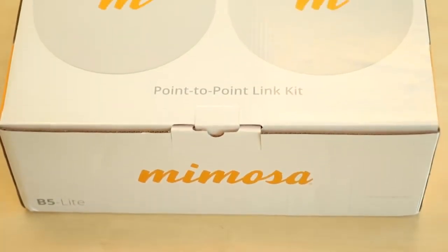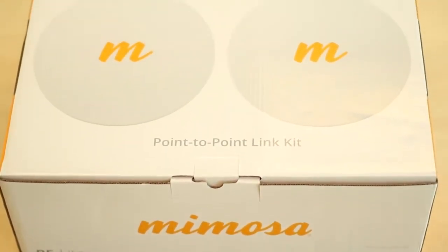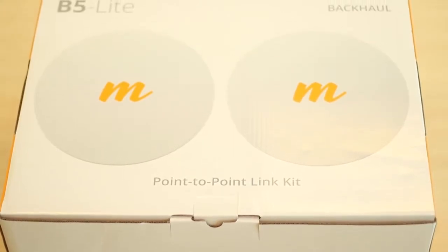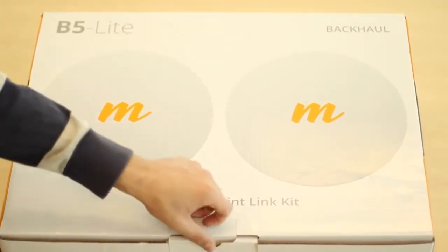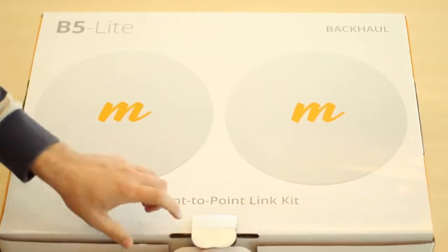This is the unboxing of the Mimosa B5 Lite radio and the parts that come with it. The B5 Lite package comes with two radios inside the Mimosa labeled Point-to-Point Link Kit box.